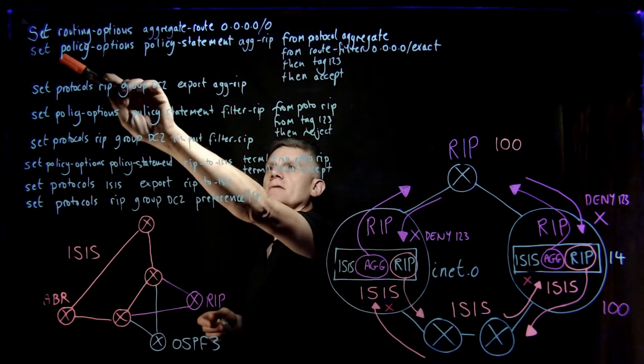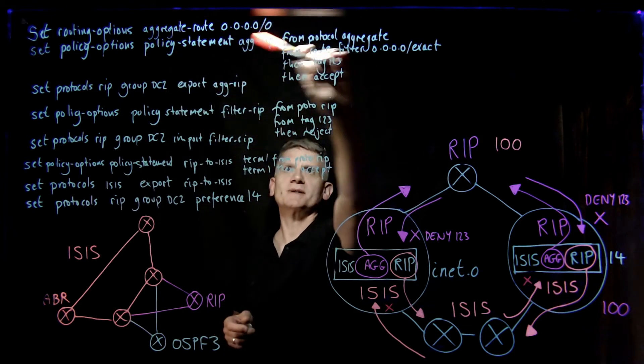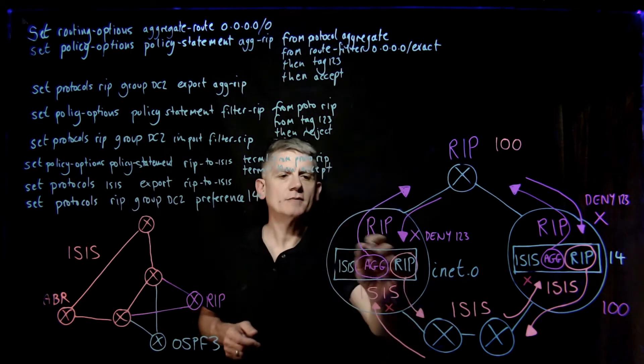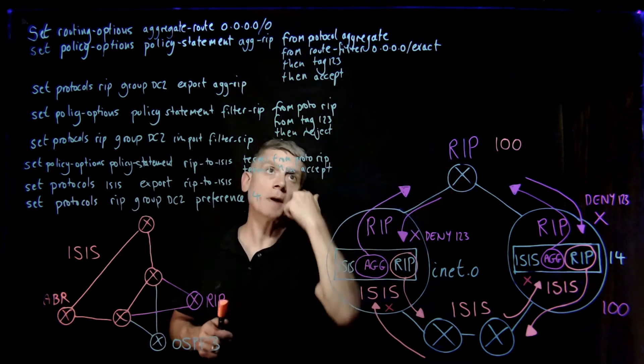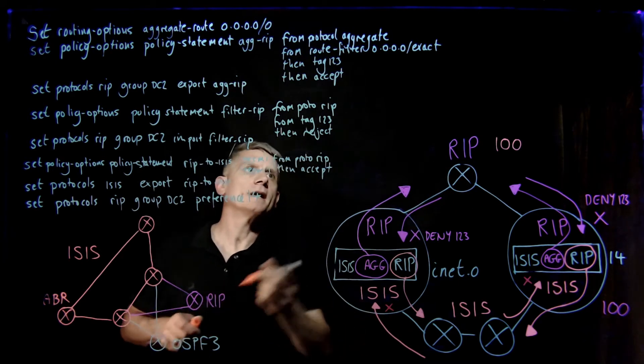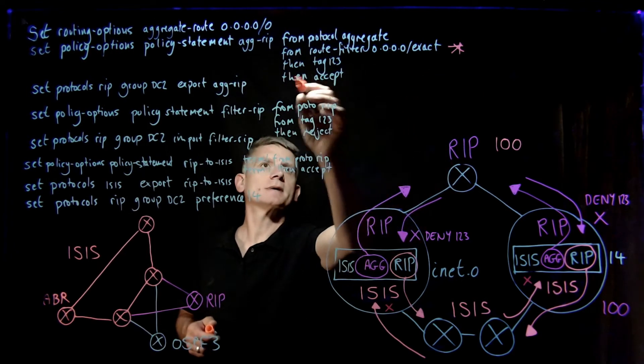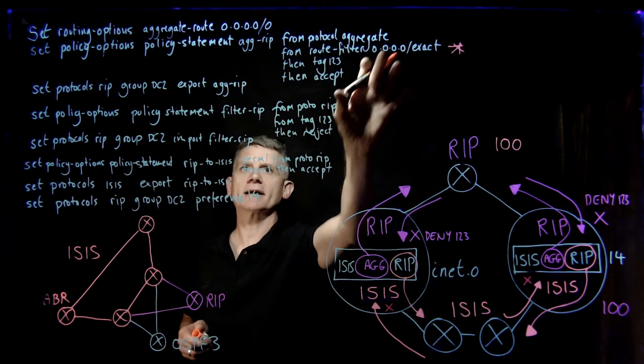We see it up here, so we're going to go into the routing options, going to create the aggregate default route. You can see it here in this diagram. We're going to be exporting that out of RIP. We are going to select it with the policy statement. We're going to tag it, and out it goes.